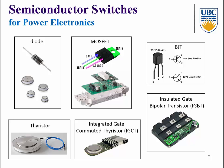We may have different semiconductor switches depending on applications. For example, we may have a diode. A diode is a two-terminal device with an anode and cathode. This small diode carries a small current — a few amps when it is turned on — and can block only a small voltage, maybe tens of volts.